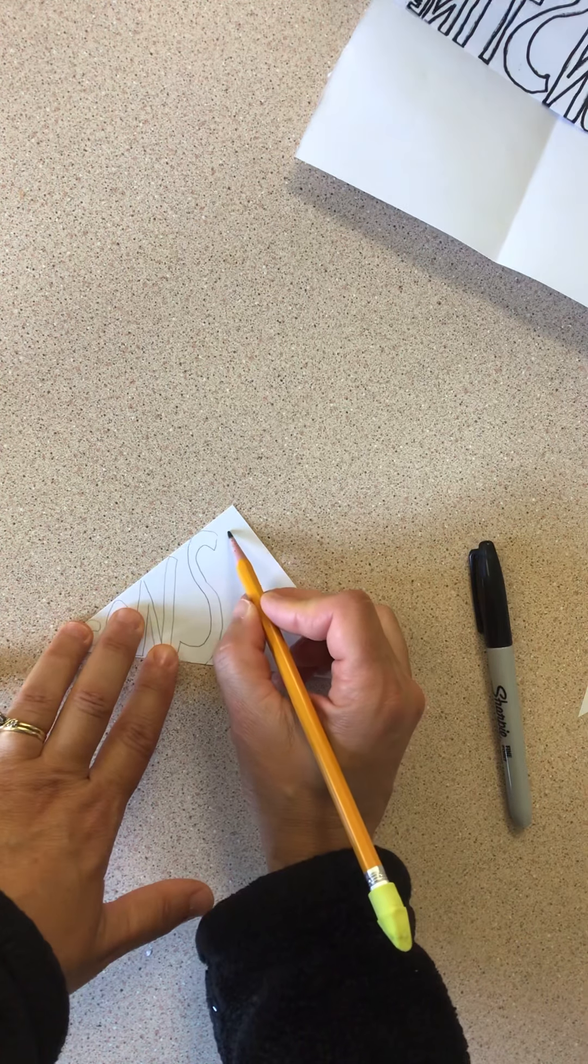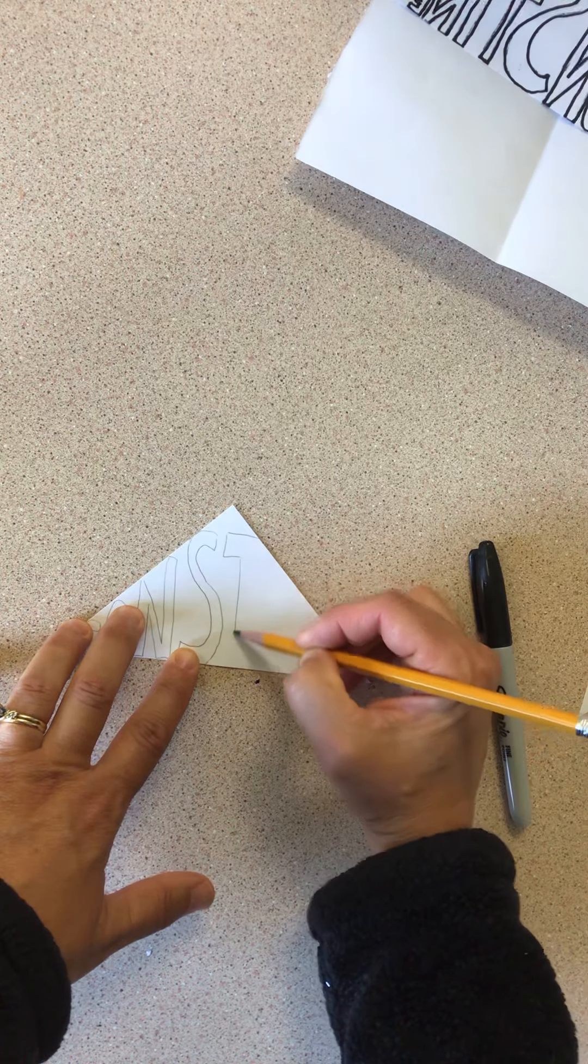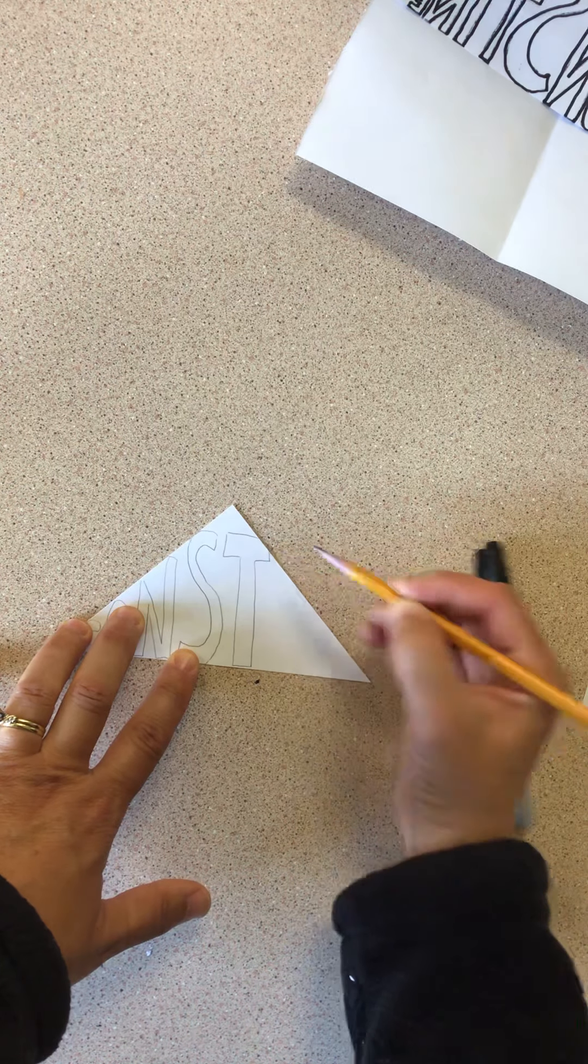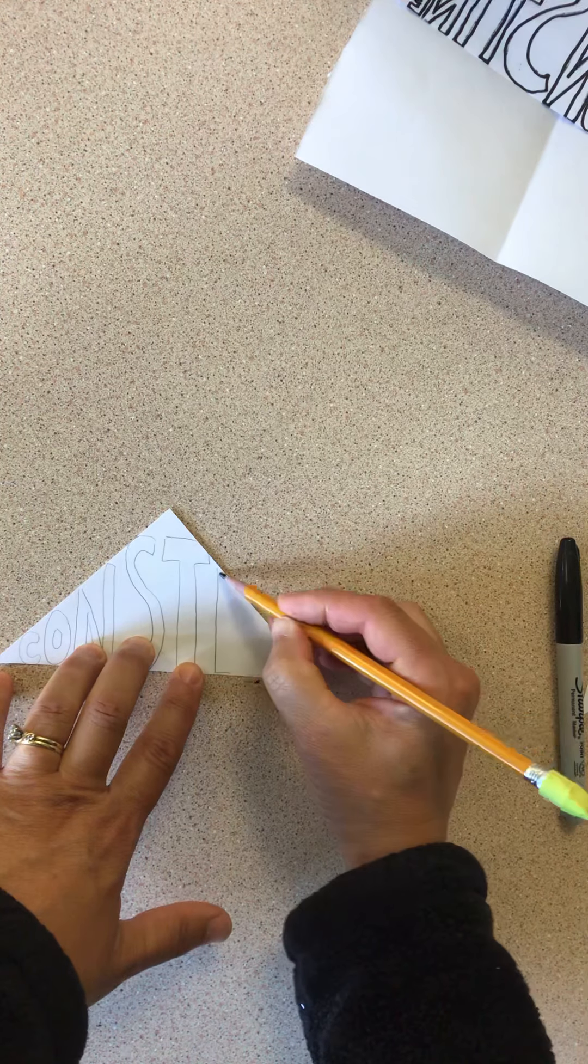Now I have a T, so I'm going to go across. My T is going to be a little bit skinny, all the way to the bottom. Then I have an I. That's a simple letter to make.